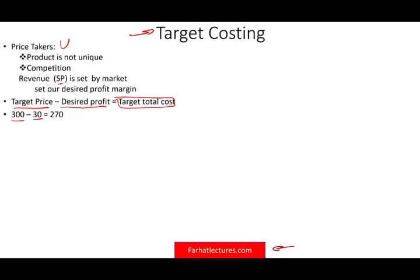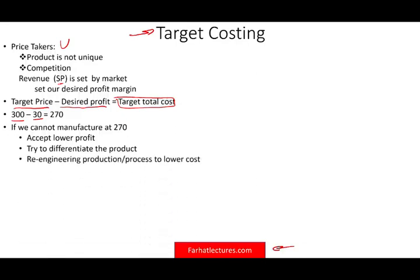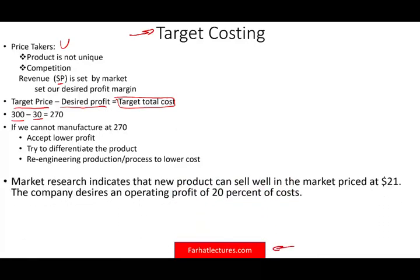Now what happens if you cannot manufacture this item for $270? If you can't, you have to accept a lower profit because you can only sell it for that price, or try to differentiate your product so you can increase the selling price, or re-engineer the production process to lower the cost. The best way to illustrate target costing is to work through a couple of quick examples.